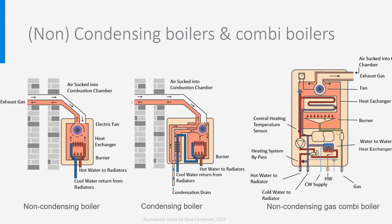A combi boiler may be found in condensing and non-condensing designs. An additional heat exchanger is placed for hot tap water heating. When there is a demand for hot tap water, the hot water flow to the radiator is diverted to a water-to-water heat exchanger, where it gives its heat to the cold tap water (CW), which is heated to produce hot water (CHW). Because the demand for hot tap water is generally for a short time — a few seconds at a kitchen tap to 15 minutes in a shower — people won't notice that the space heating has stopped.